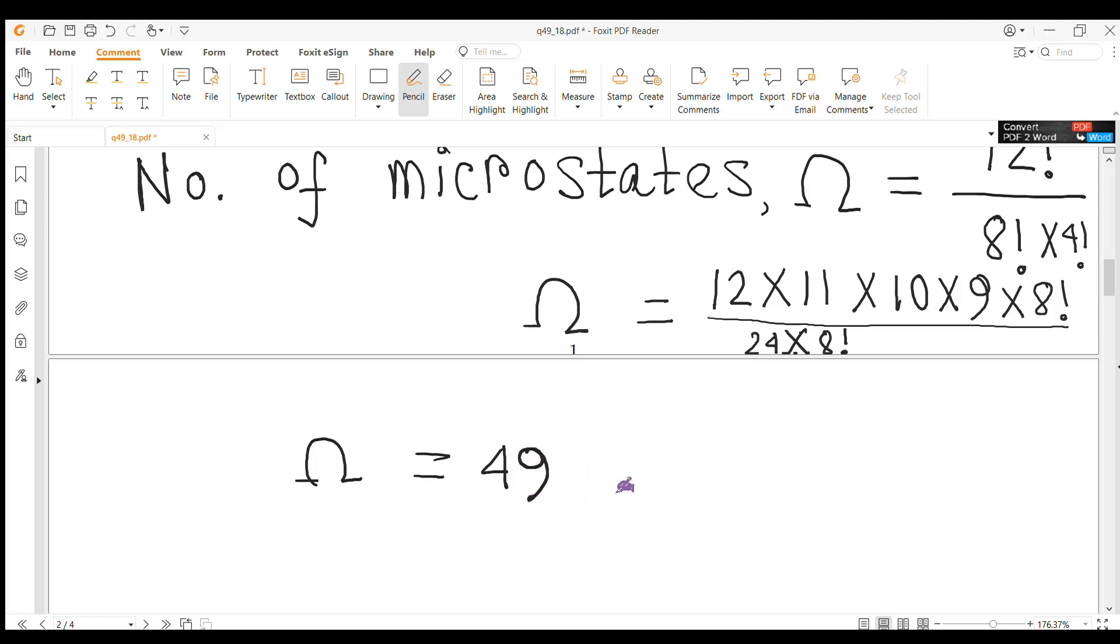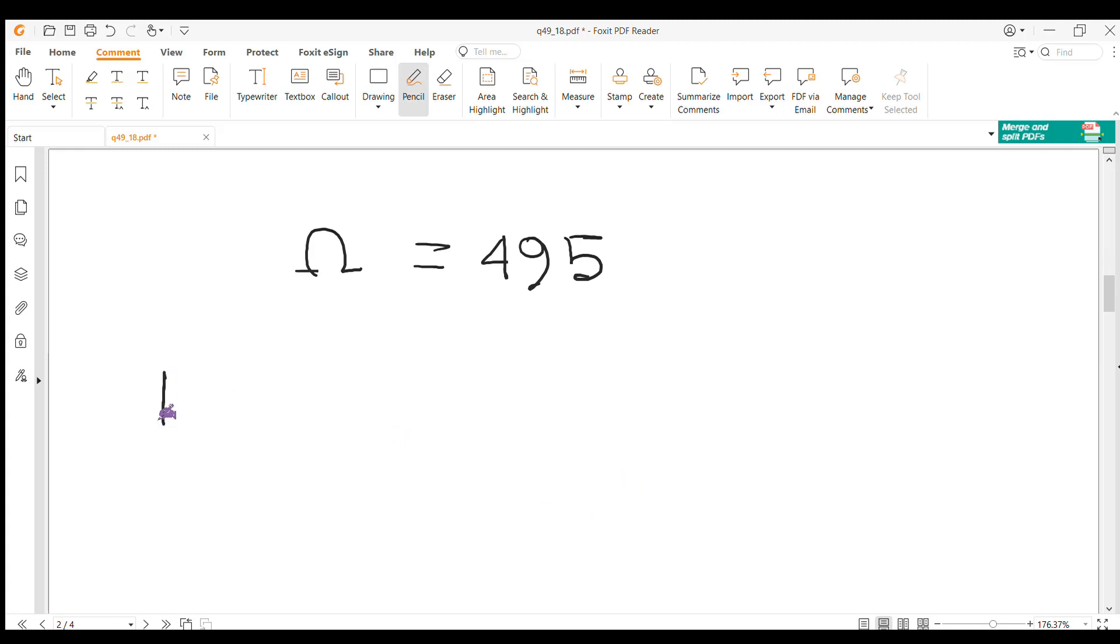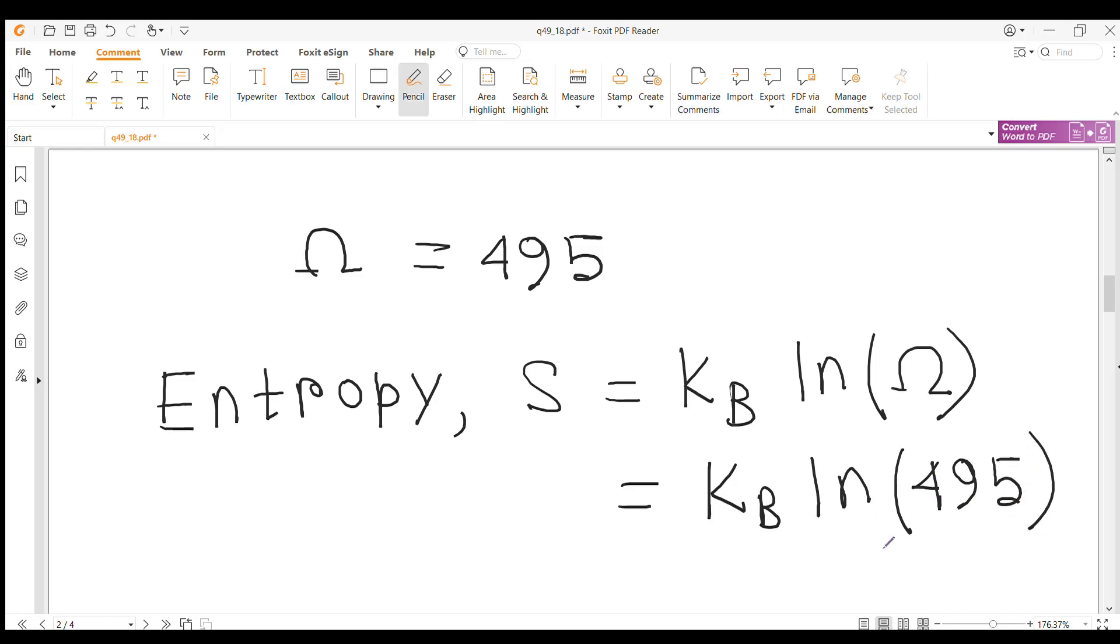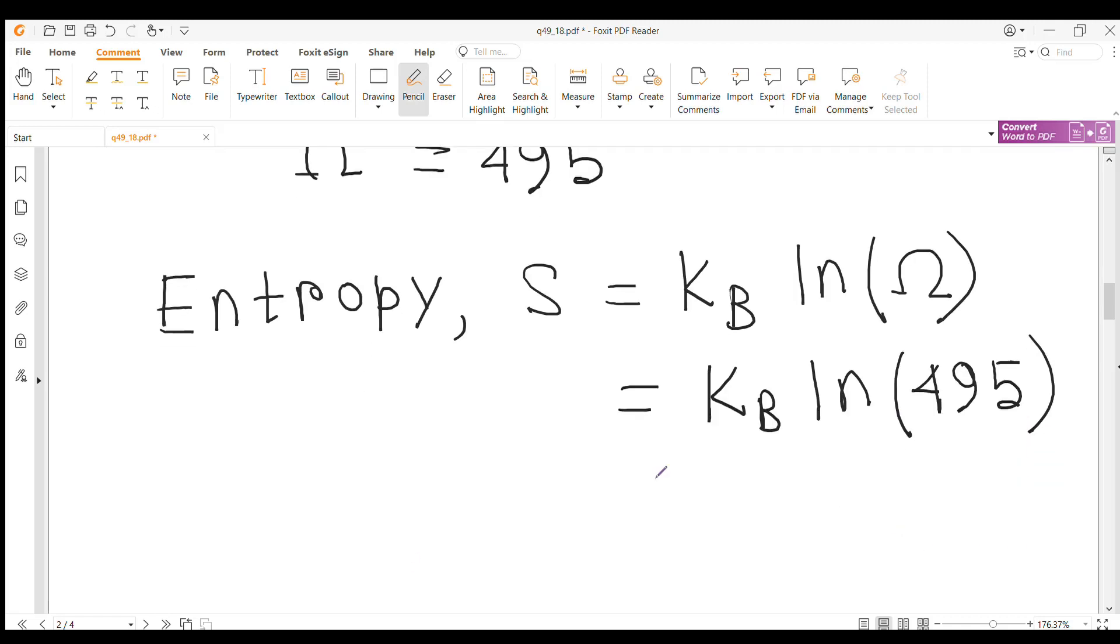So the entropy is given by kb log omega. Here omega is equal to 495, so the entropy is equal to kb log 495. Log of 495 is approximately equal to 6.2, so the entropy is equal to 6.2 kb. So in this question, the correct answer is 6.2.